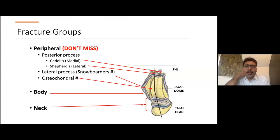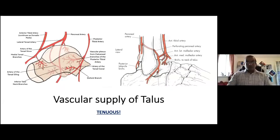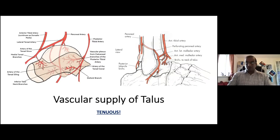The vascularity of the talus is extremely important — this is one of the most important slides to take away from this talk. All arteries are perforating arteries entering the bone. It has no muscle or tendon insertion to provide blood supply. Main supply is from the posterior tibial artery, dorsalis pedis artery, and the perforating branch of the peroneal artery. The main supply to the body is from the tarsal sling — a combination of the artery of the tarsal sinus and artery of the tarsal canal coming medial and lateral respectively — with anastomosis around the posterior process from the calcaneal branch and laterally from the peroneal artery. You should practice drawing this diagram for your exams.